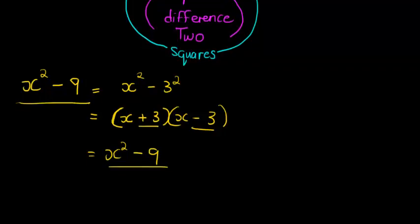This is called the difference of two squares, and I'll do one more example. How about a hundred x squared minus one? All we need to do is notice that there's two terms, a negative between the two terms, and all of the factors can be written as squares.